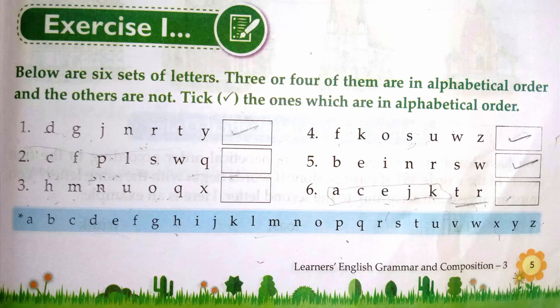In this, below are six sets of letters, three or four of them are in alphabetical order and the others are not. Tick right the ones which are in alphabetical order. So what you have to do in this, you have to tick right those alphabets or those series of alphabets which are in alphabetical order.